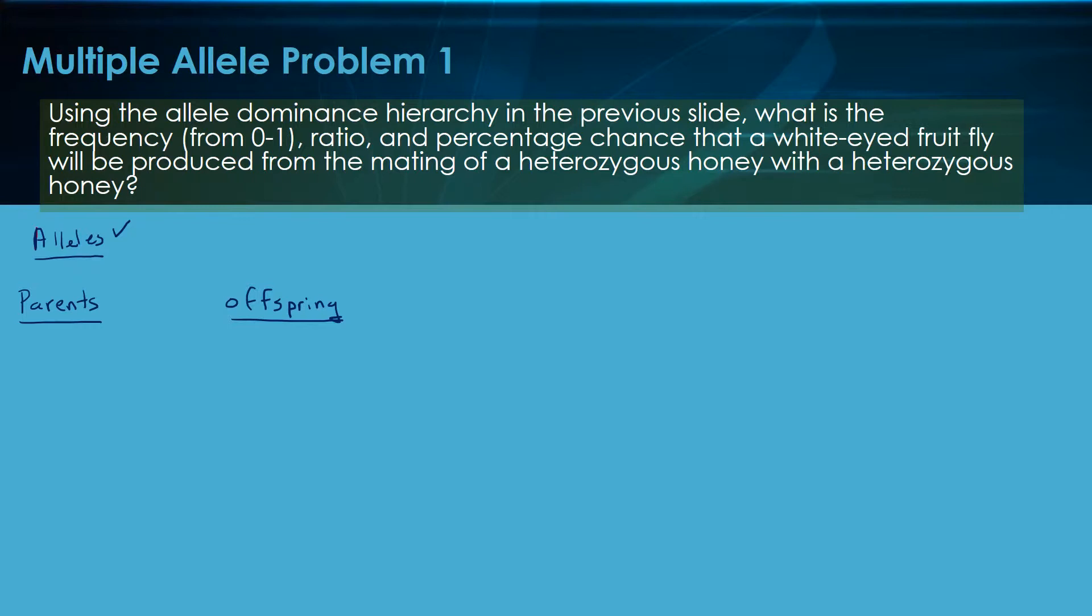So that's going to be an E4, E4. That's the only combination that gives you a white-eyed. We want to know the chance of a heterozygous honey crossed with a honey. So we've got a honey crossed with a honey. Let's write, first of all, the phenotype. Let's put the genotype down here.